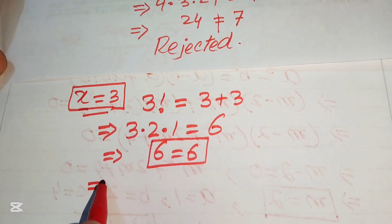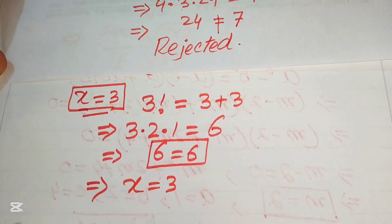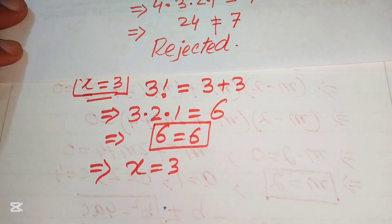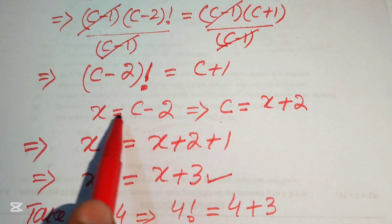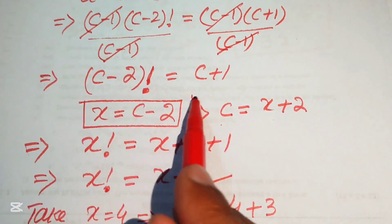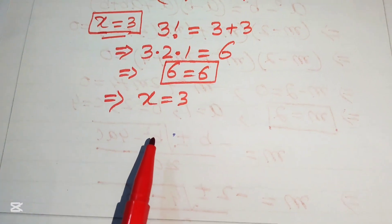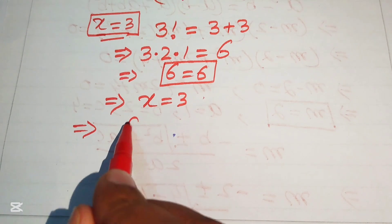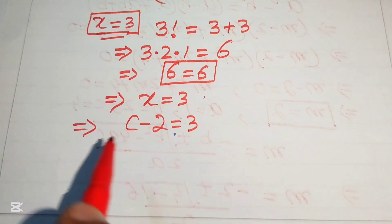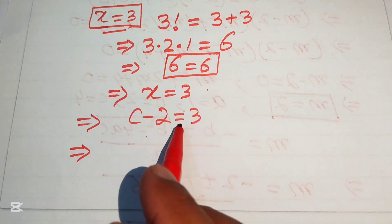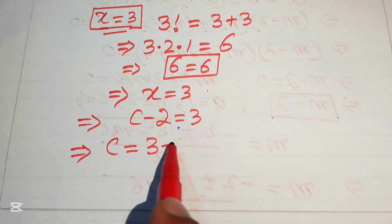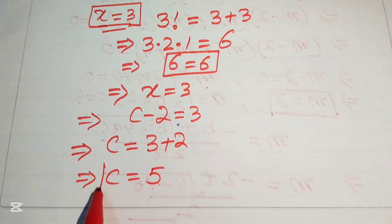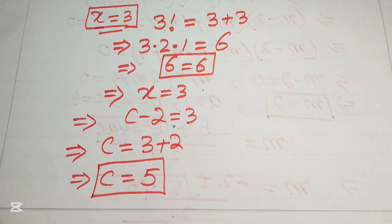Since x equals 3, we back-substitute using x equals c minus 2. Putting x equals 3 gives c minus 2 equals 3, so c equals 3 plus 2, and finally c equals 5. This is the final answer.